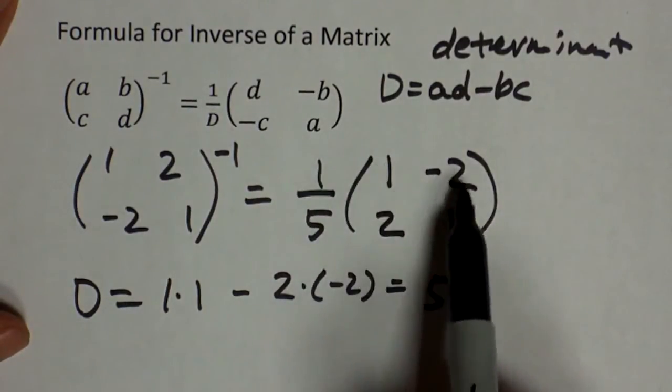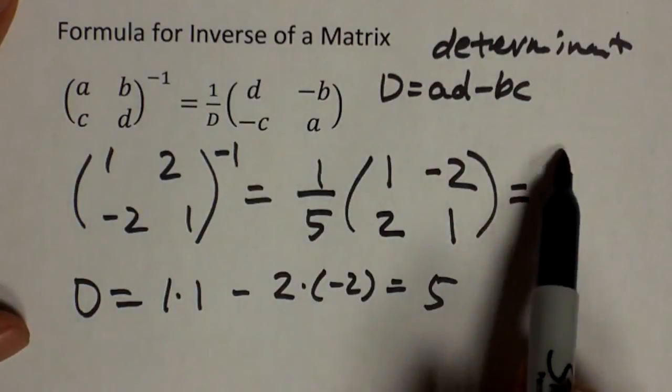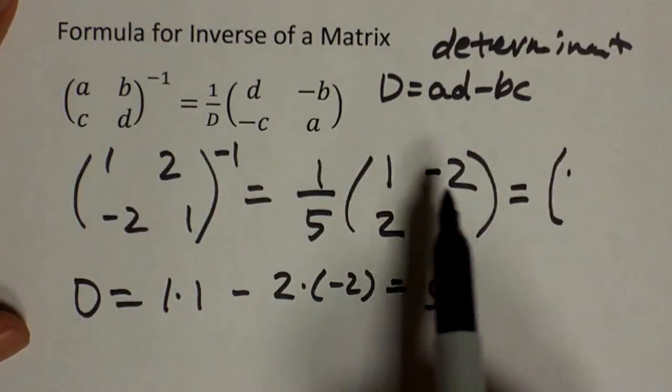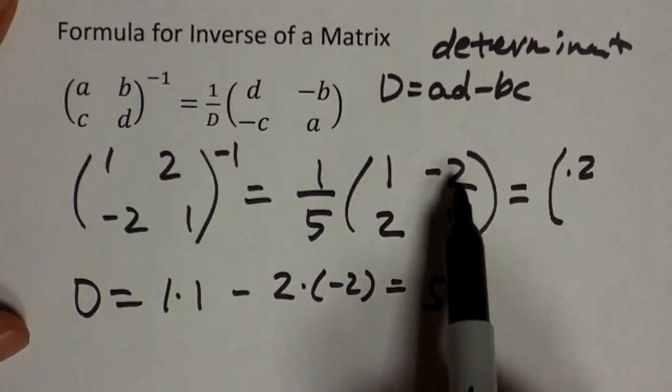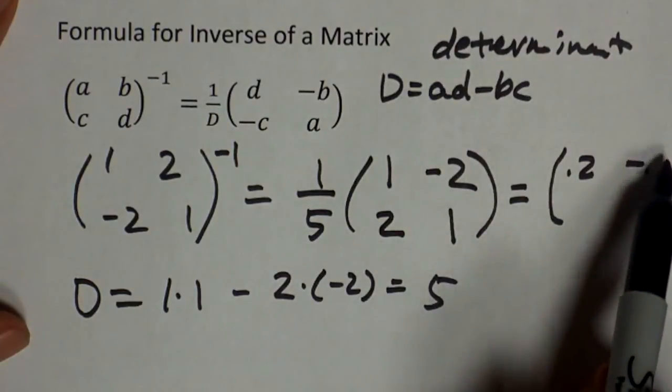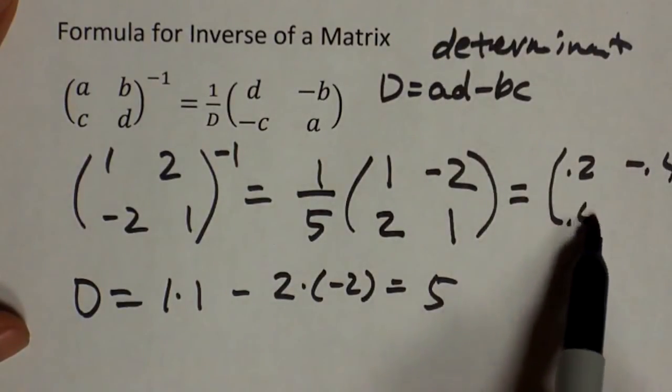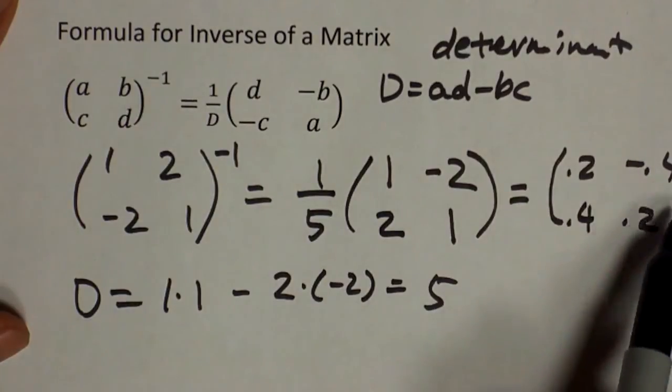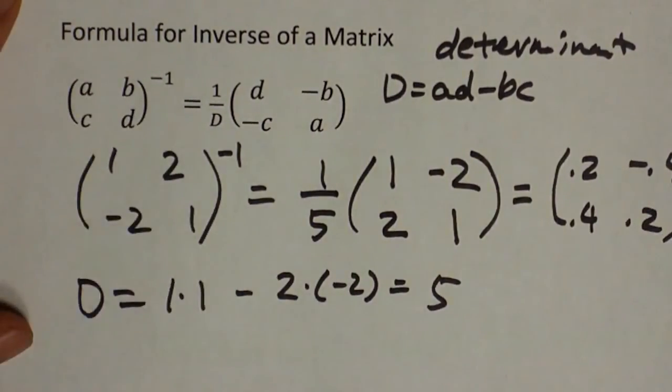Now, multiplying one-fifth to each of these matrix elements, you'll find that the value that you get is one over five, which is 0.2. Two over five, which is 0.4, which is exactly the same matrix that we got before.